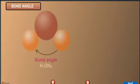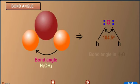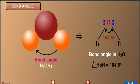Now we will study about bond angle. Here you can see the bond angle in H2O molecule is equal to 104.5 degrees.